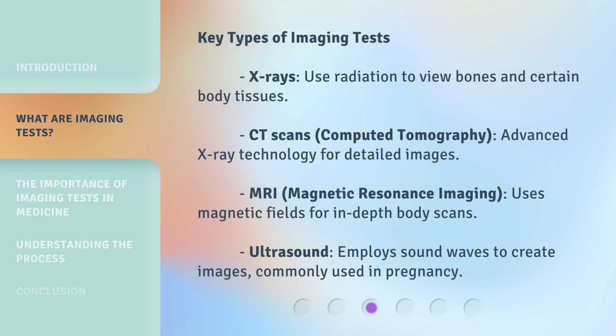Key types of imaging tests: X-rays use radiation to view bones and certain body tissues. CT scans (computed tomography) use advanced X-ray technology for detailed images. MRI (magnetic resonance imaging) uses magnetic fields for in-depth body scans. Ultrasound employs sound waves to create images, and is commonly used in pregnancy.